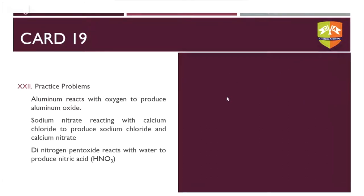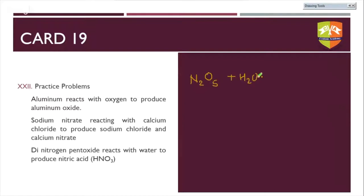A slightly tricky reaction: dinitrogen pentoxide — 'dinitrogen' means two nitrogens, 'pentoxide' means five oxygens, so N₂O₅ — reacts with water to give nitric acid HNO₃. There are two nitrogens on the left but only one on the right, so multiply HNO₃ by 2. Now hydrogen is balanced at two on each side. Oxygen: five on the left plus one from water equals six; 2HNO₃ gives six oxygens too. The reaction is balanced: N₂O₅ + H₂O → 2HNO₃.